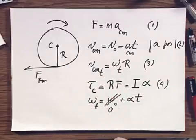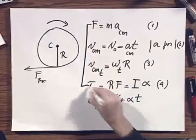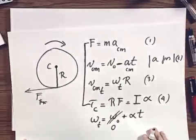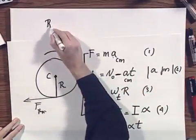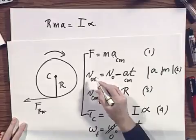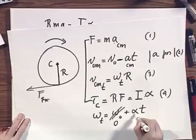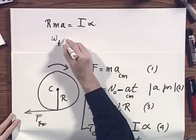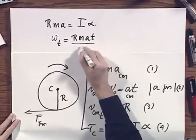Look at these equations. I first want to combine this one with this one, and what I'm going to do, I'm going to eliminate F. And when I eliminate F between this one and this one, I'm going to get R times M times A equals I times alpha. And now I'm going to eliminate alpha by using this equation. So I'm going to write down omega equals T equals R times M times A times T divided by I.